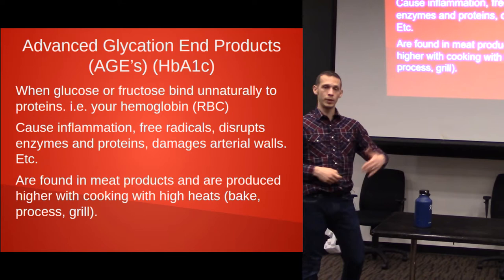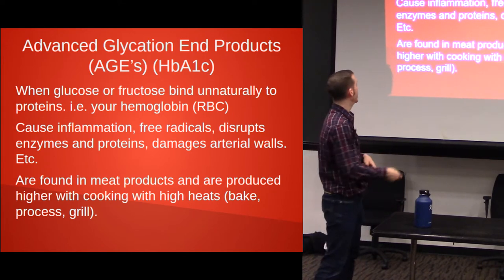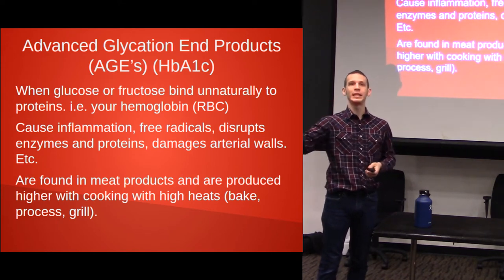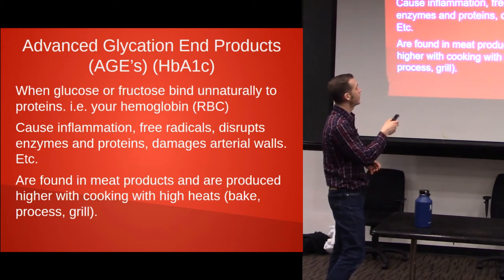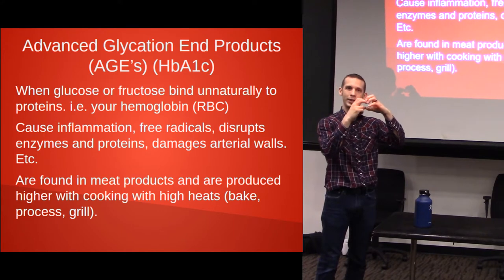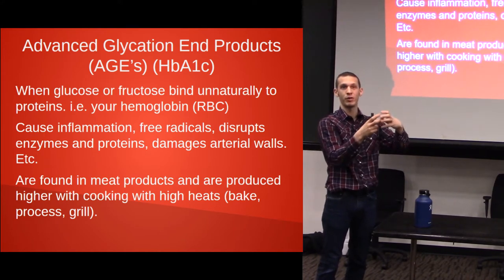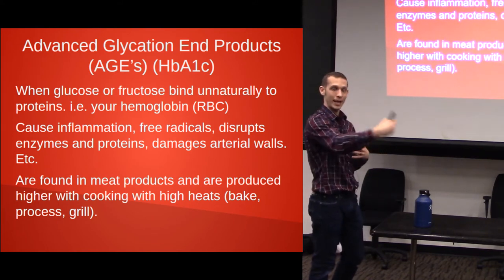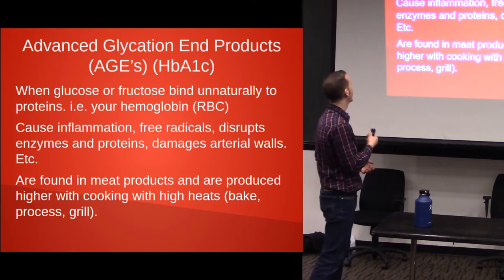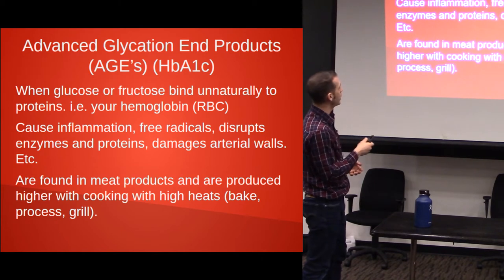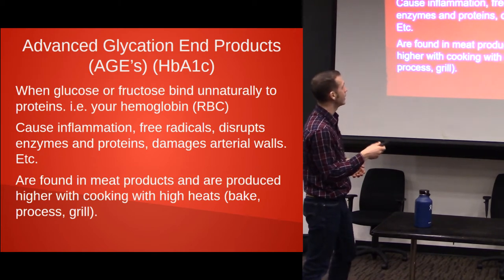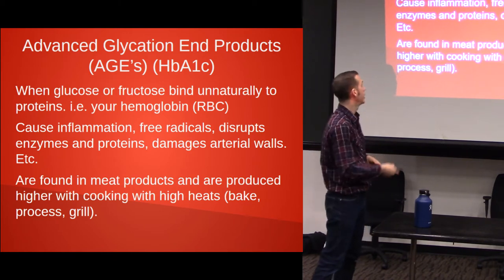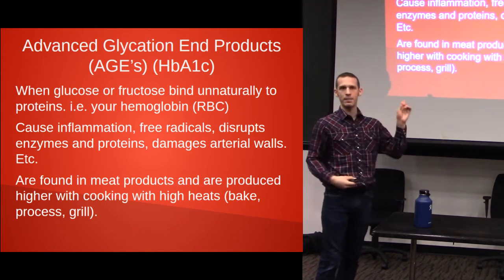Advanced glycation end products — AGEs — have a lot to do with diabetes and aging. Diabetes is a type of accelerated aging. In diabetics, we measure AGEs as A1C — HbA1c. Specifically, AGEs form when glucose and fructose abnormally bind to a protein; in this case, your hemoglobin. If fructose and glucose bind to your blood, that's measured as A1C — it's not normal, you don't want to have that. AGEs in general cause inflammation, free radicals, and they disrupt enzymes and proteins. They also damage arterial walls. Inflammation is a big driver of diabetes.